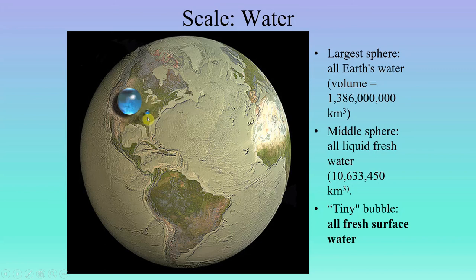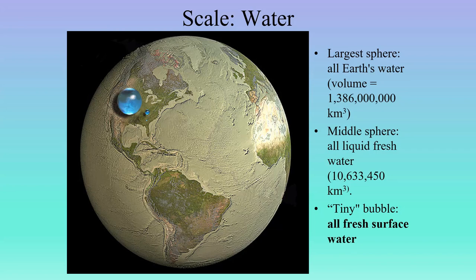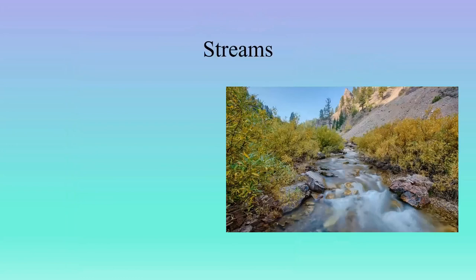So between this bubble — which is all of the world's liquid fresh water — and all this liquid surface fresh water, we have removed all the groundwater. The vast majority of the fresh water on our planet is groundwater. But this tiny little bubble should be striking to you, because fresh water is very important to us as humans. We use it almost exclusively for all our endeavors: not just drinking, showering, and bathing, but for most commercial and industrial activities as well.